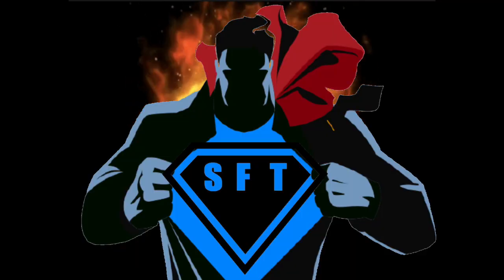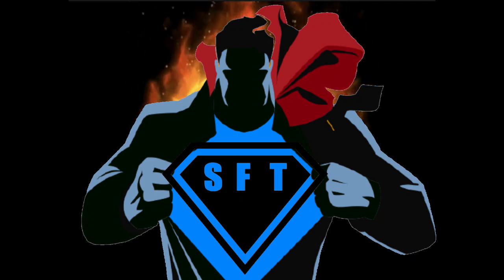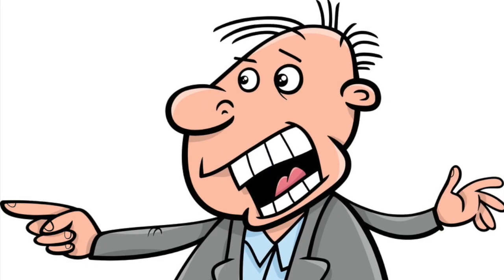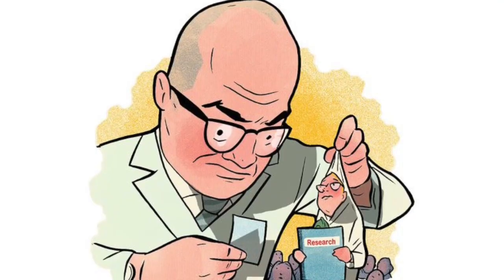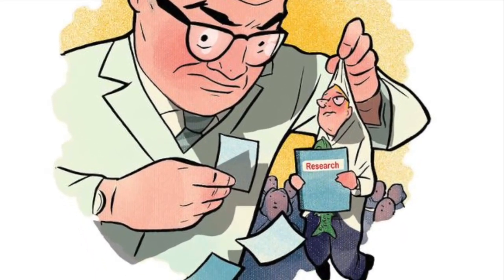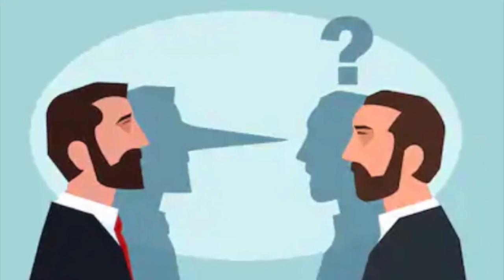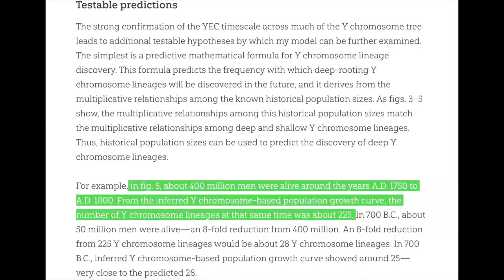The defender argues the critics never addressed the big picture: why are Jensen's predictions working so well? All they do is spout standard population genetic theory, then accuse Jensen of being wrong because he did not follow it. The defender says they did not actually find any problems in Jensen's methods — all they did was reveal their evolutionary bias, because Jensen didn't do it their way. The predictions of Jensen's method are claimed to actually be working.